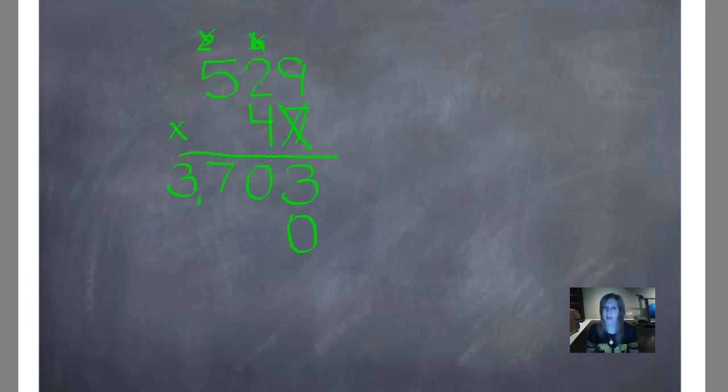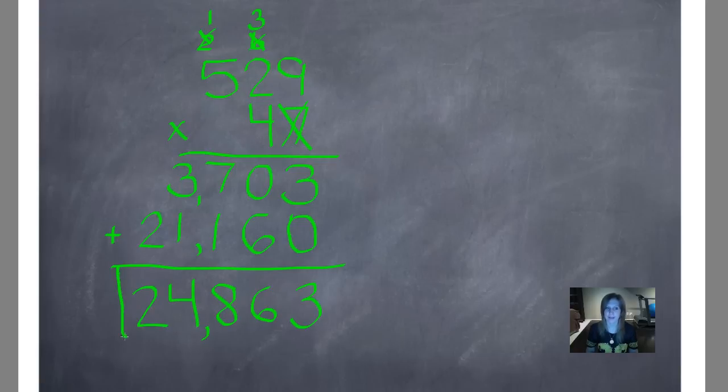Now we'll multiply by the 4. 4 times 9 is 36. 4 times 2 is 8 plus 3 is 11. 4 times 5 is 20 plus 1 is 21. And we'll add up our partial products. 3 plus 0 is 3. 0 plus 6 is 6. 7 plus 1 is 8. 3 plus 1 is 4. 0 plus 2 is 2. Let's check it.